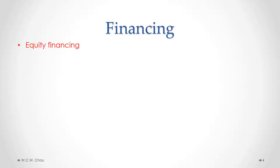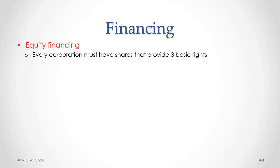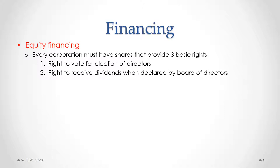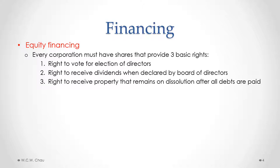With equity financing, which involves the corporation obtaining capital by issuing shares, every corporation must issue shares that provide at least three basic rights. All three basic rights don't have to be in one type of share, but they must be found across the shares issued. The first right is the right to vote for the election of directors. The second basic right is the right to receive dividends when declared by the board of directors — dividends being the payment of net profits by the corporation to the shareholders. The third basic right is the right to receive property that remains on dissolution after all debts are paid.